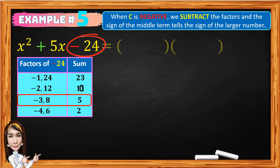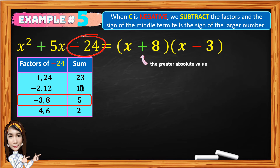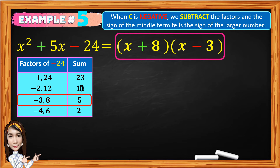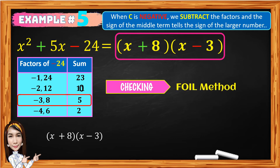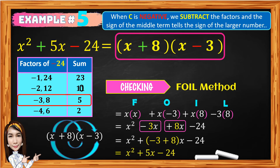We are going to write the factors inside the two pairs of parentheses. The factor of x squared is x times x, and the factors are positive 8 and negative 3. Take note that positive is the sign of the greater absolute value. So the factor of x squared plus 5x minus 24 is the quantity x plus 8 times the quantity x minus 3. To check if your factor is correct, we can use the FOIL method. Given the quantity x plus 8 times the quantity x minus 3, the product is x squared plus 5x minus 24. And you got it correct.